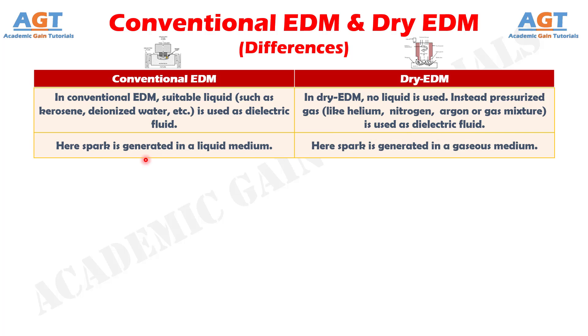Number 2: In conventional electric discharge machining, the spark is generated in a liquid medium, whereas in dry electric discharge machining, the spark is generated in a gaseous medium.